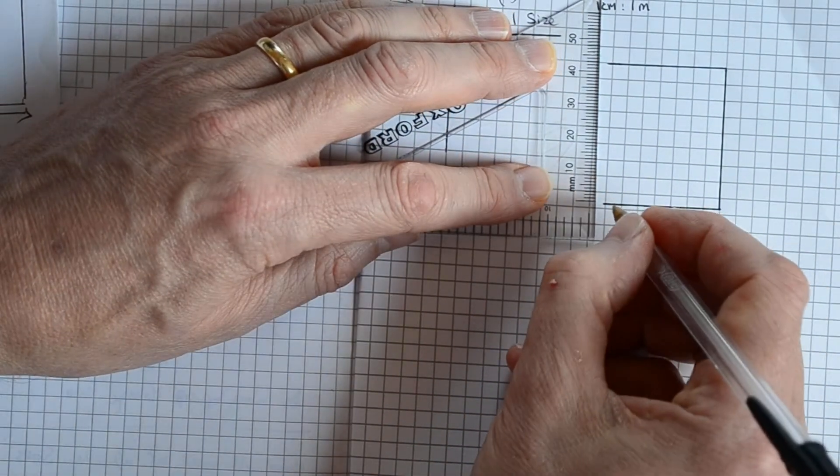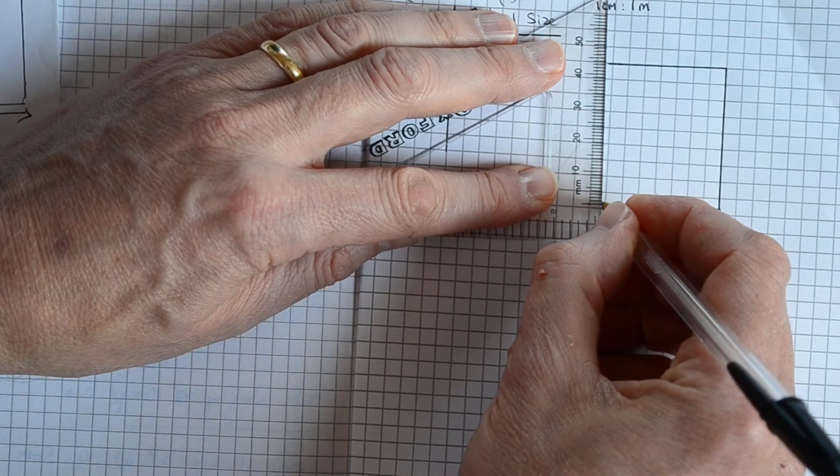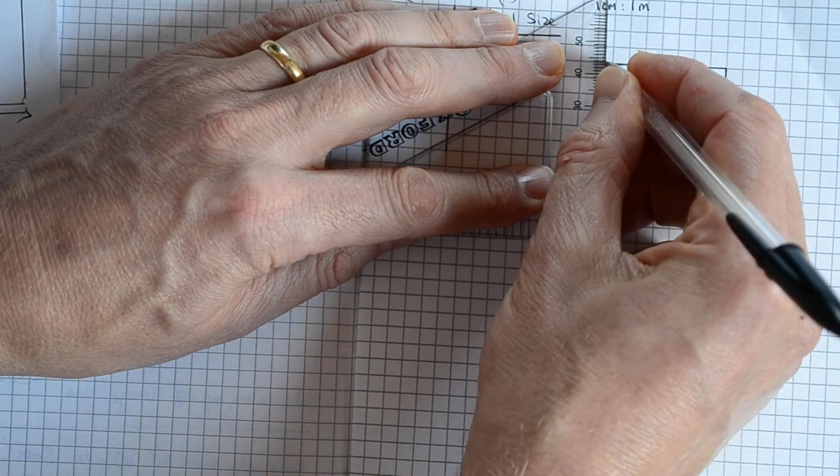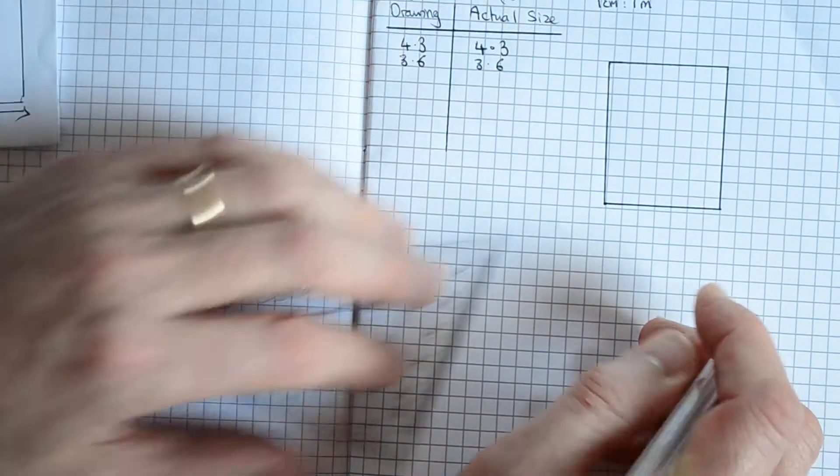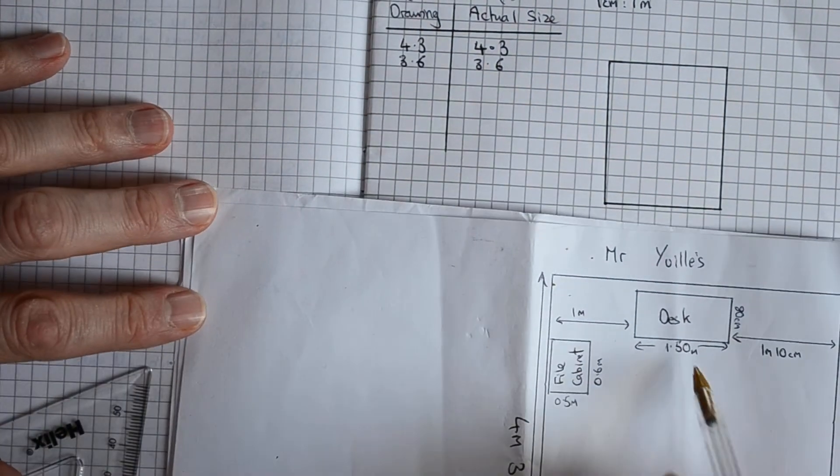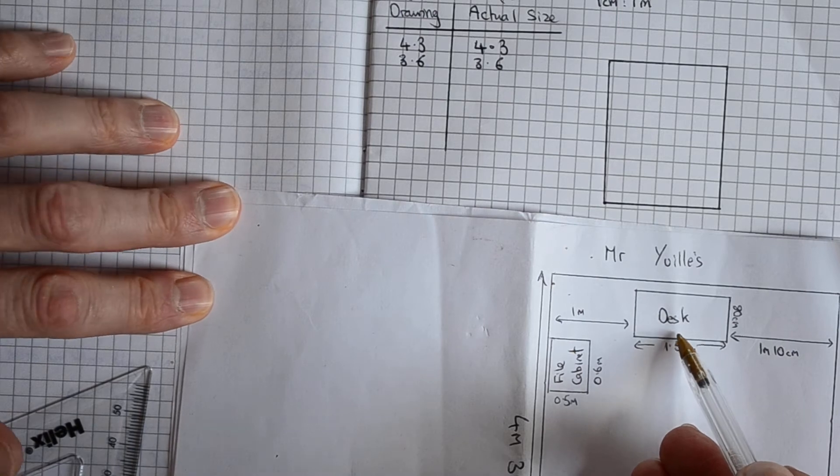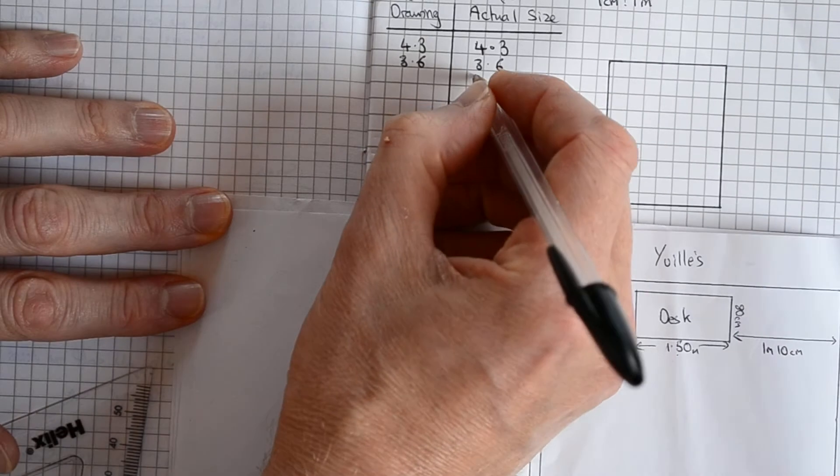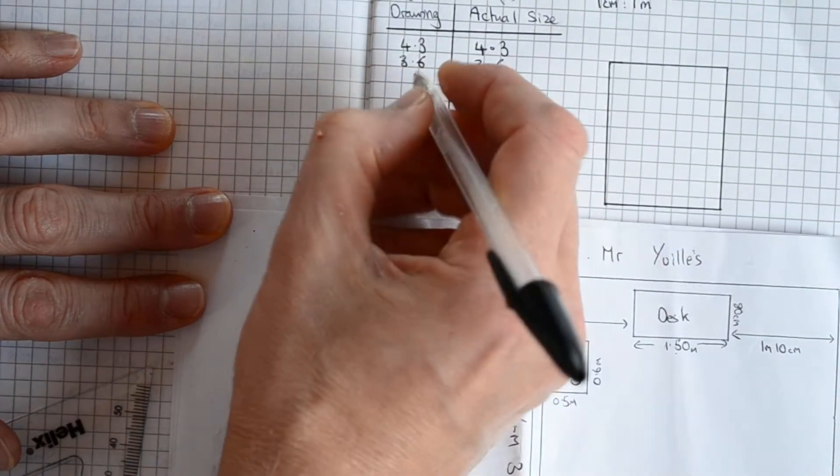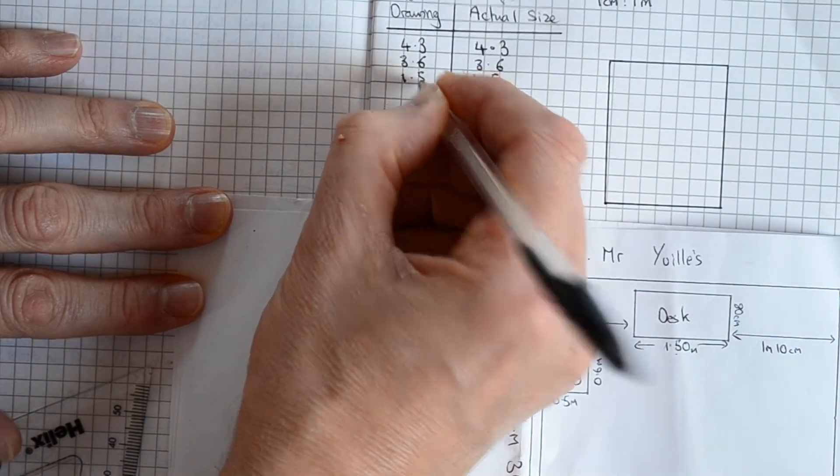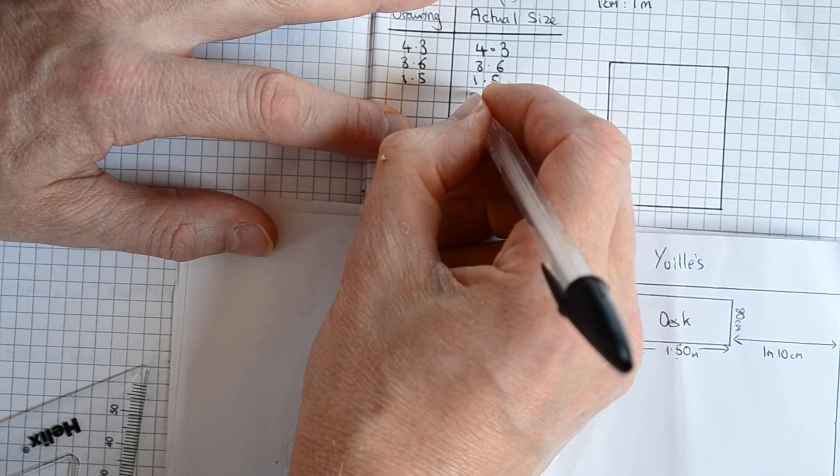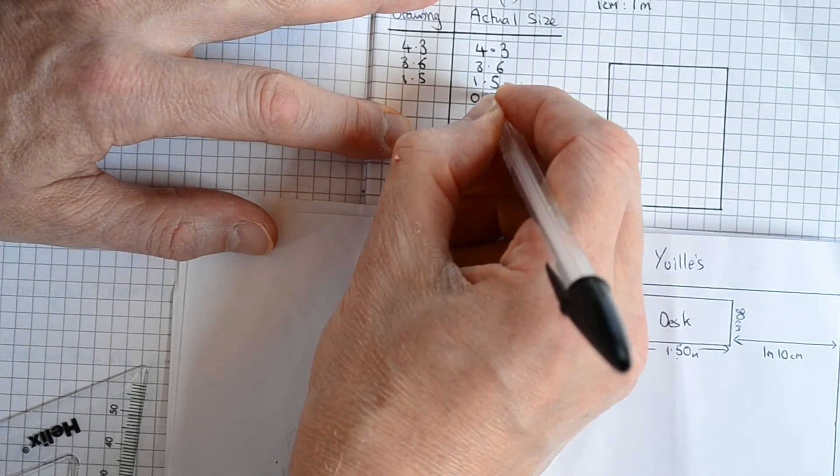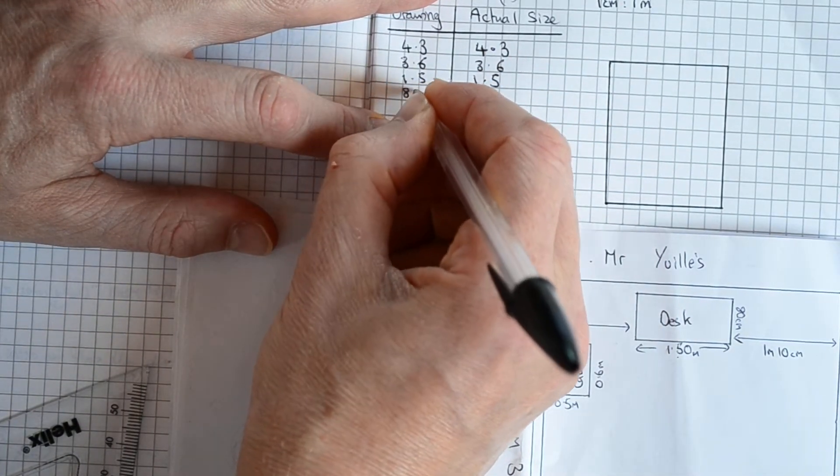Let's do one more thing. I've got my desk here and that's 1.5 meters by 80 centimeters, so 1.5 meters, that's 1.5 centimeters, and 80 centimeters is 0.8 meters, so that's 0.8 centimeters on my diagram.